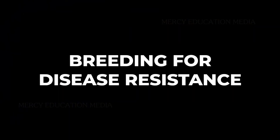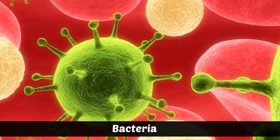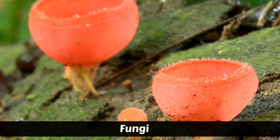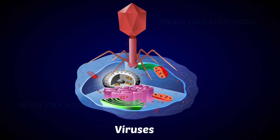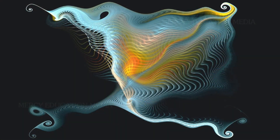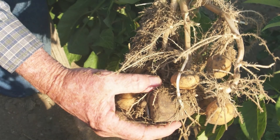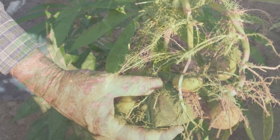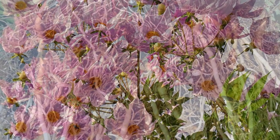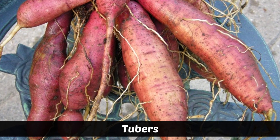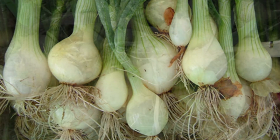Many crop plants suffer from several diseases caused by pathogens such as bacteria, fungi, viruses, nematodes, protozoa, and mycoplasma. In vegetatively propagated plants like potato, cassava, sugarcane, and dahlia, viral pathogens are transmitted through their roots, tubers, bulbs, and rhizomes.